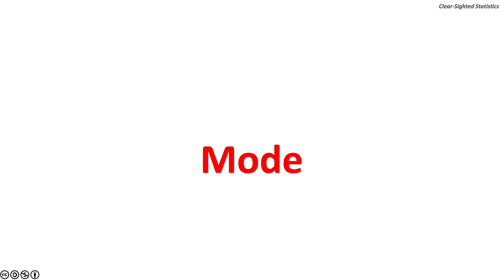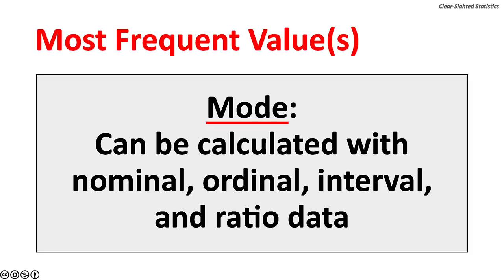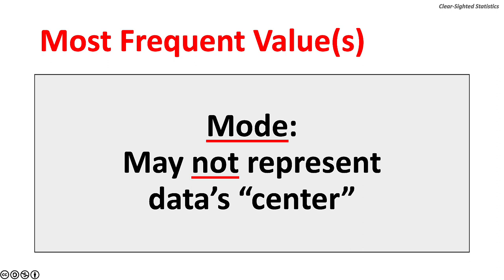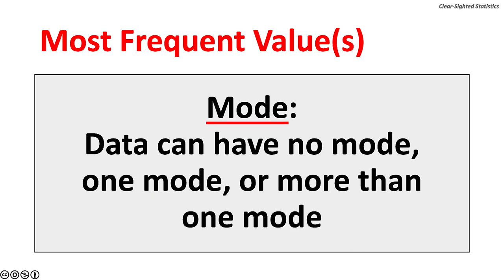Let's consider the mode first. The mode measures the most frequently occurring value or values. It can be calculated with nominal, ordinal, interval, or ratio data. Unlike some measures of central location, the mode is not distorted by extreme values, which are called outliers. The mode may not represent the center of the data. Data can have no mode, one mode, or more than one mode.